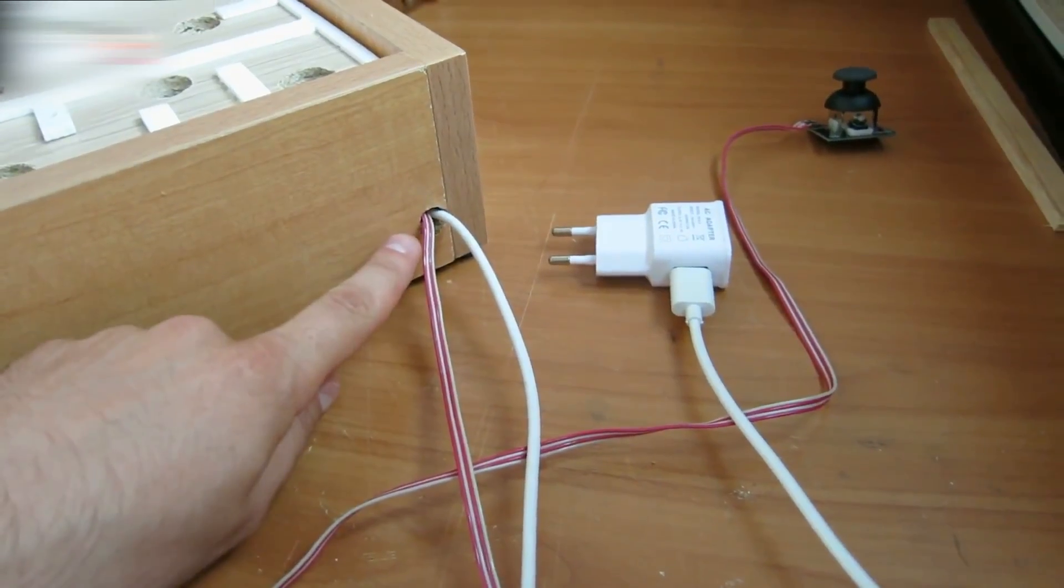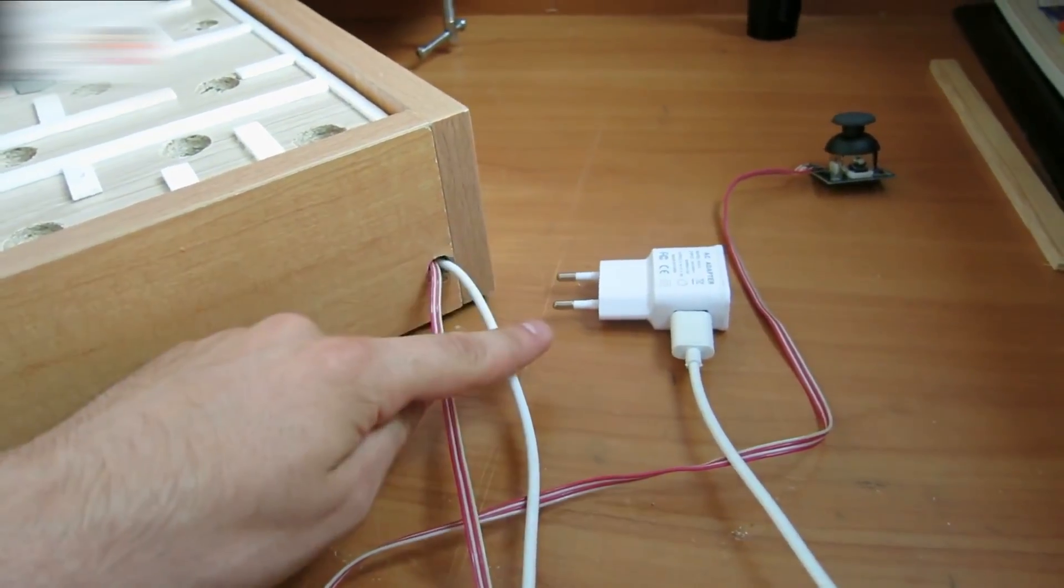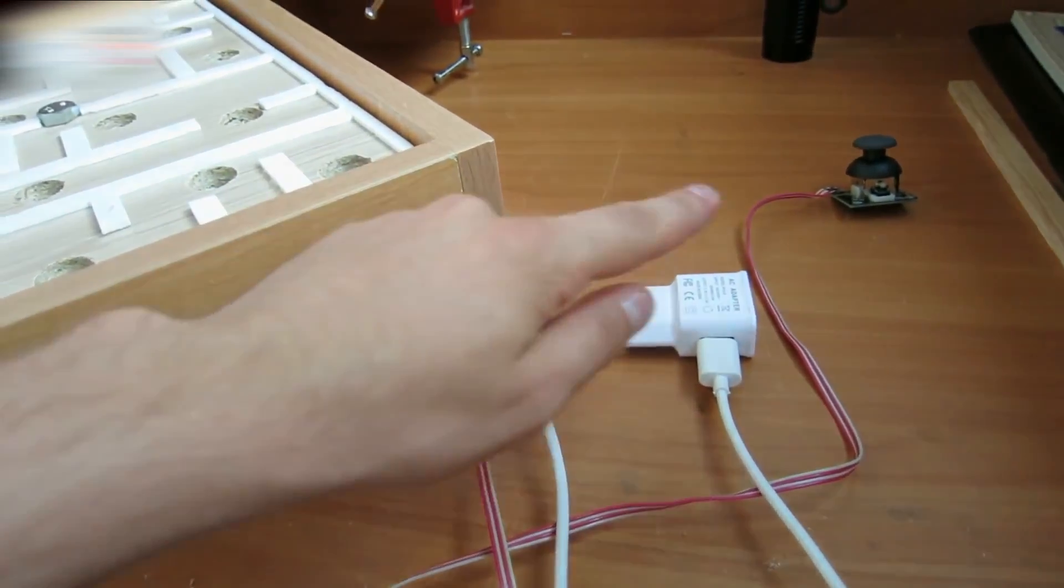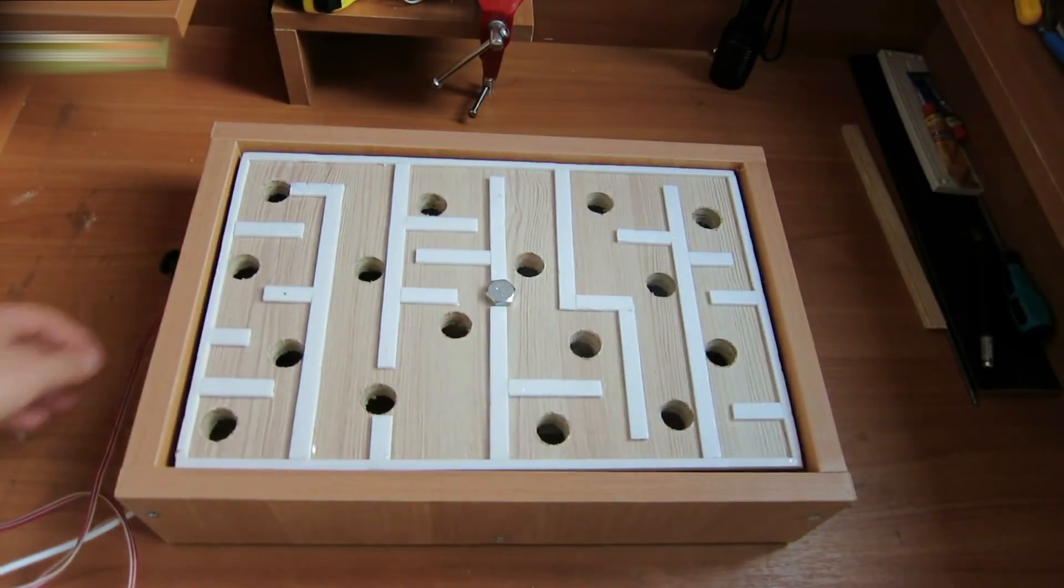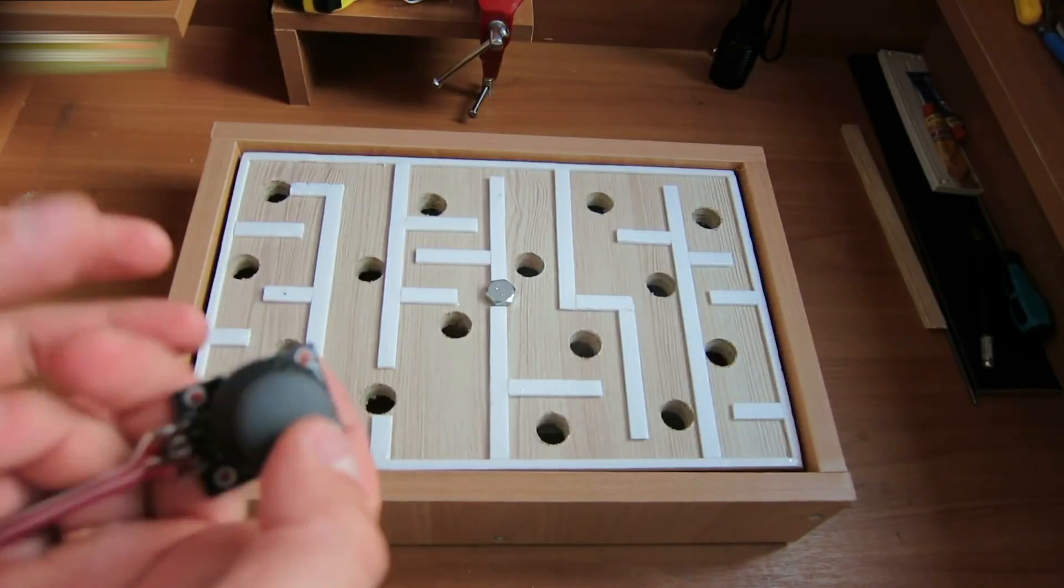Make a hole at the side corner of the box to pull the power supply wire and the joystick wire out of the box. Connect the power. Check how the device works.